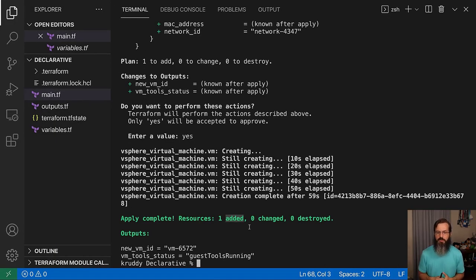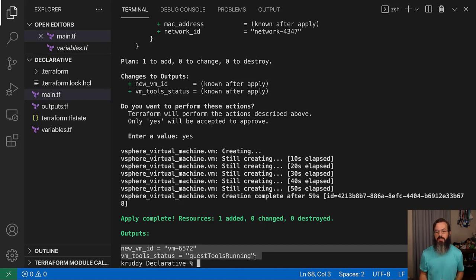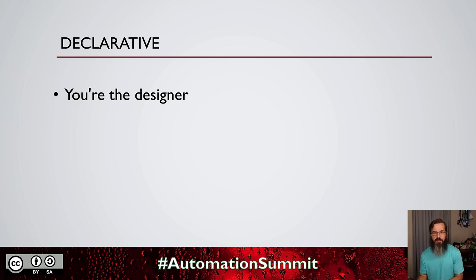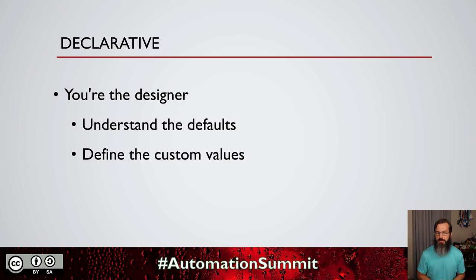Returning back to our terminal, we can see that our apply has been completed. It has added that one resource, and it's also given us a set of outputs — we can pull out some information such as the VM tools status and the new virtual machine ID. When it comes to the declarative way of doing things such as provisioning a virtual machine, this kind of takes you and puts you into the seat of a designer, because you no longer have to worry about those imperative steps. We only configured a small portion of that entire list of things that Terraform output as part of our plan process — we only really need to worry about the custom values we're going to need to change.